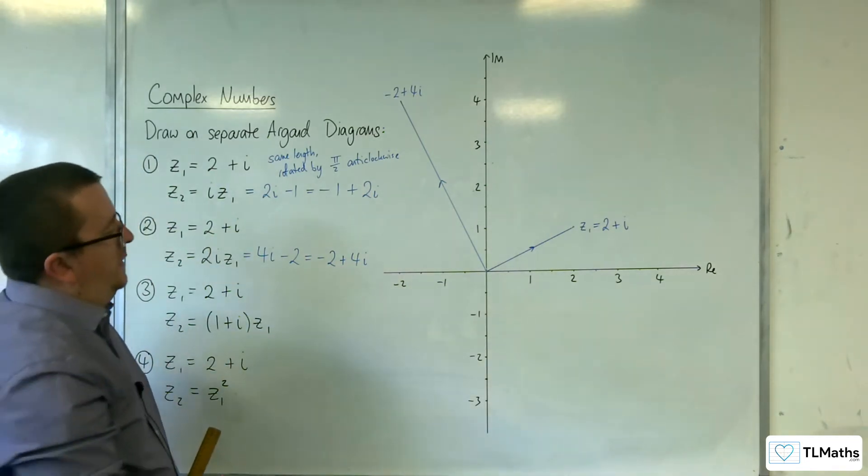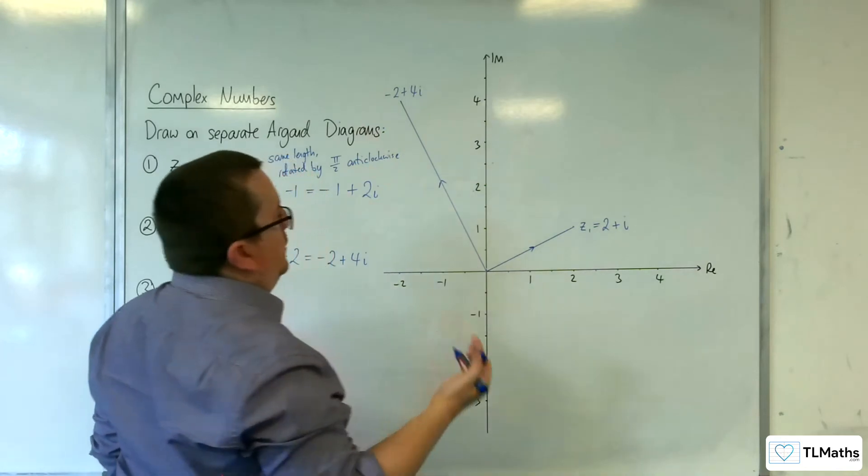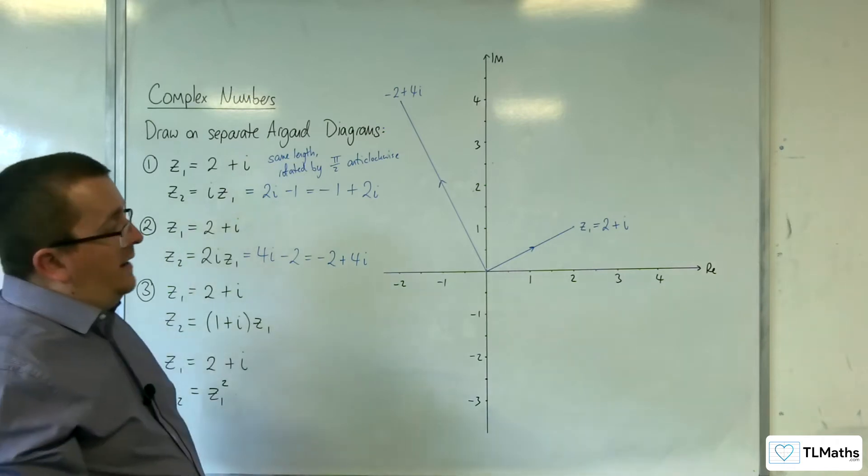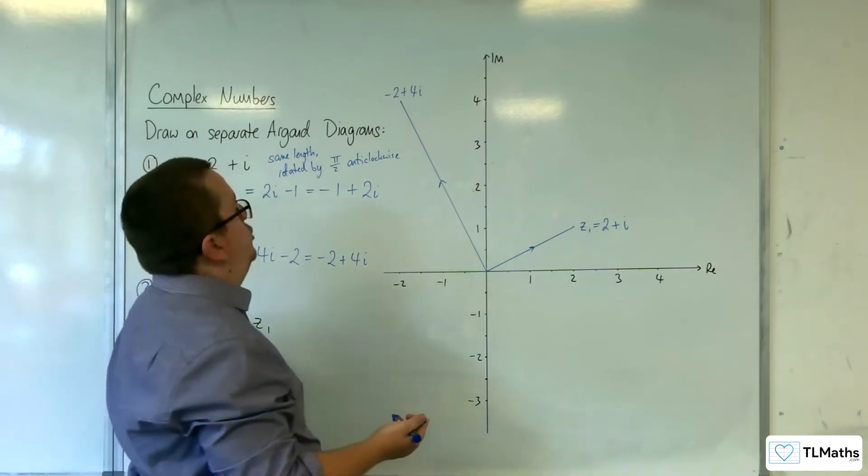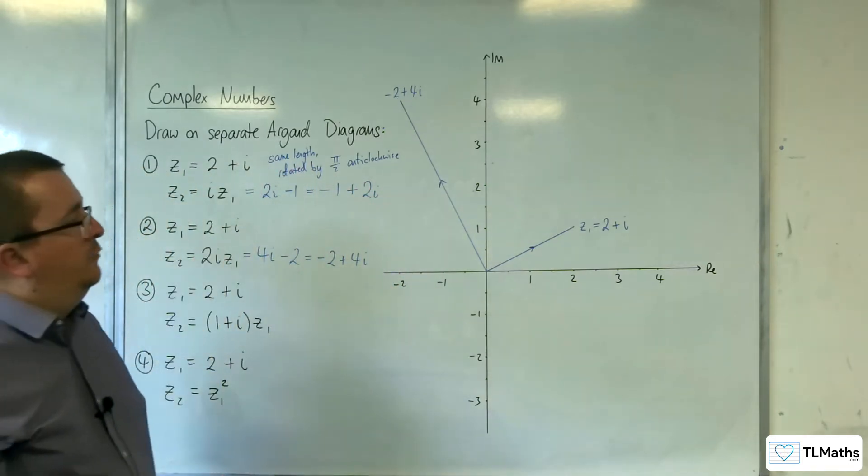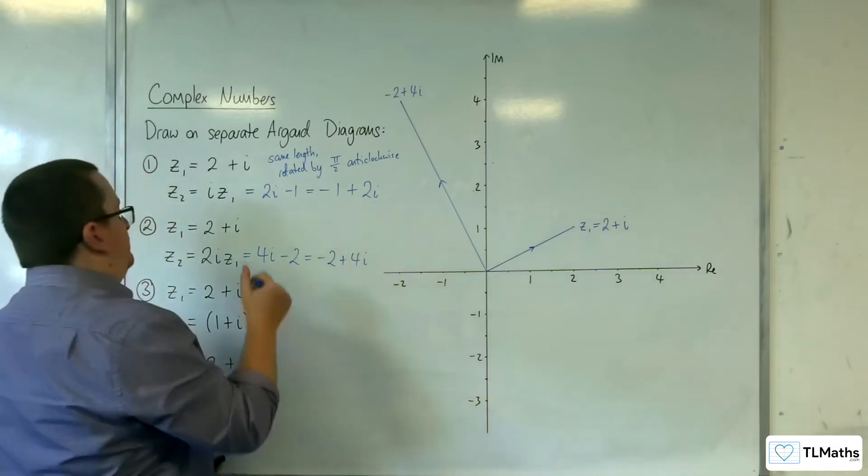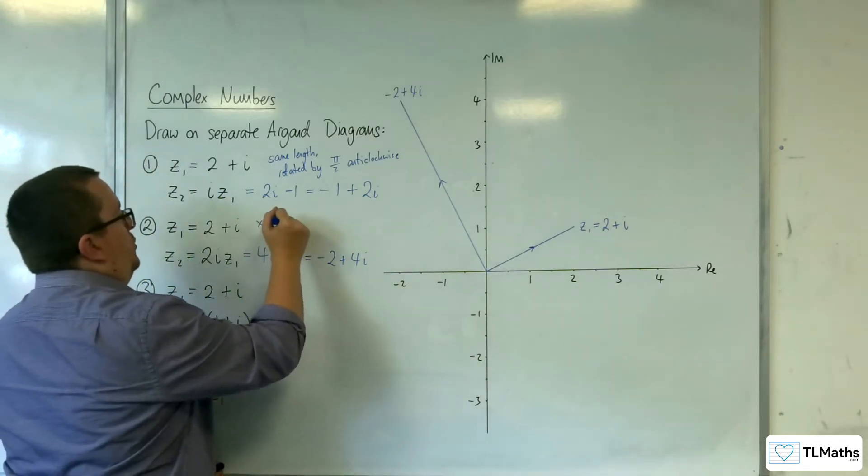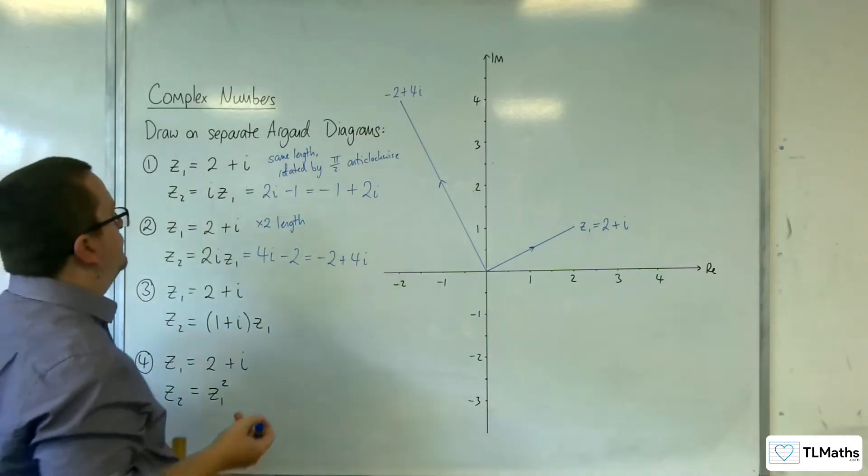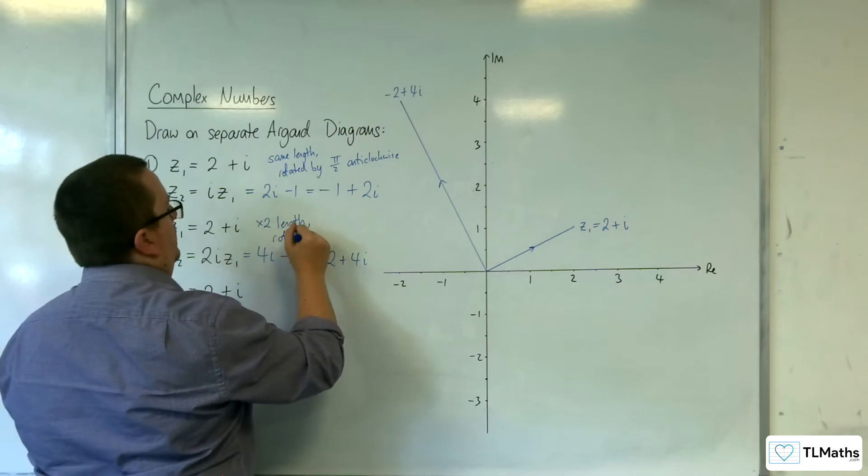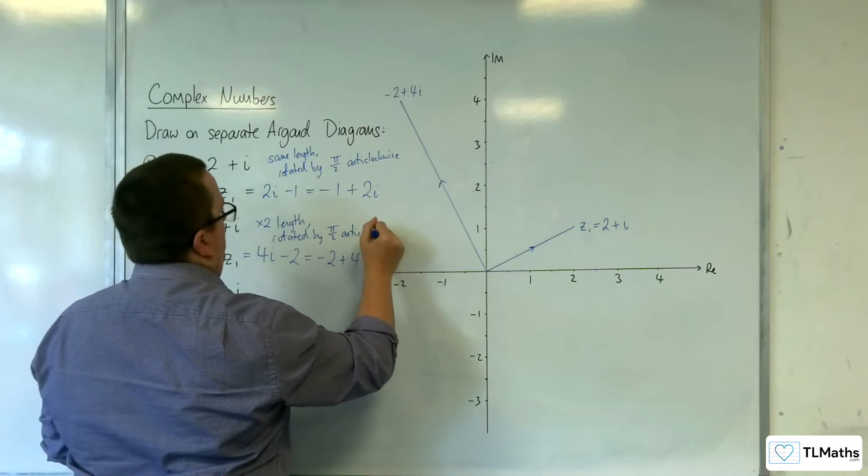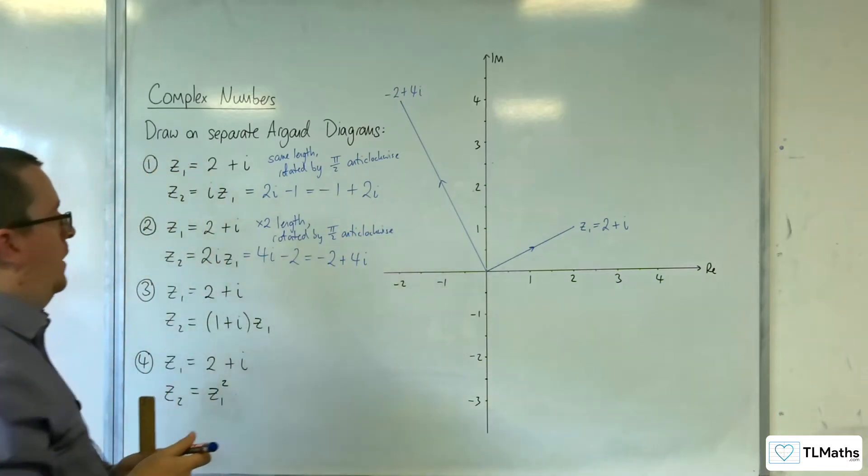This one is 2 along 4 up, so it's actually twice as long now. We've doubled in length, but we're still going in the same direction, and it's still the π over 2 anti-clockwise rotation from the original. We've times 2 in length, so the modulus is multiplied by 2, and rotated by π over 2 anti-clockwise.